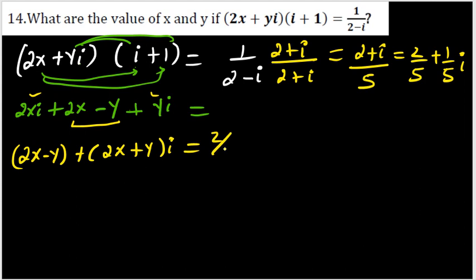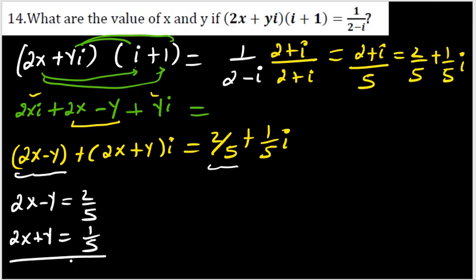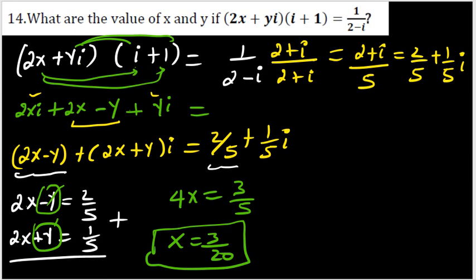Writing the left side in standard form: the real part is (2x - y) and the imaginary part is (2x + y), so the equation is (2x-y) + (2x+y)i = 2/5 + (1/5)i. Equating real parts: 2x - y = 2/5. Equating imaginary parts: 2x + y = 1/5. Adding both equations: 4x = 3/5, so x = 3/20.